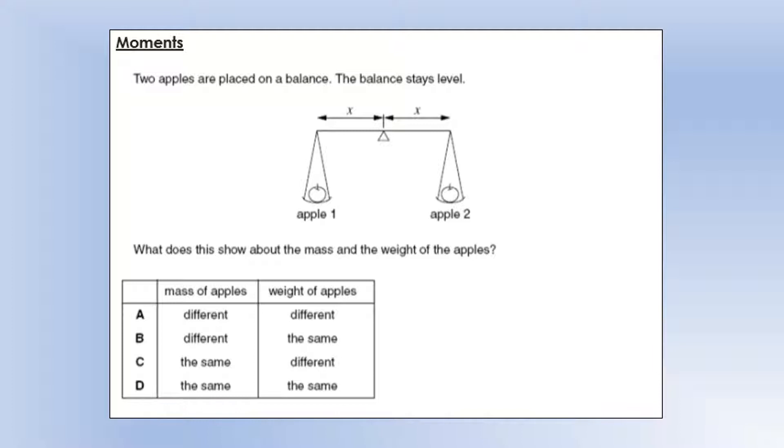If it's balanced, the moments of their weight force must be equal. If they're the same perpendicular distance from the pivot, that must mean the weight forces are equal. And as they're on the same planet, that must mean their masses are equal, so that gives us option D.